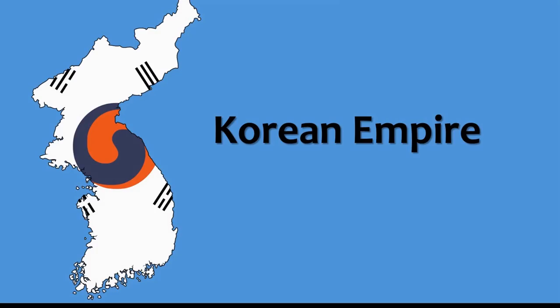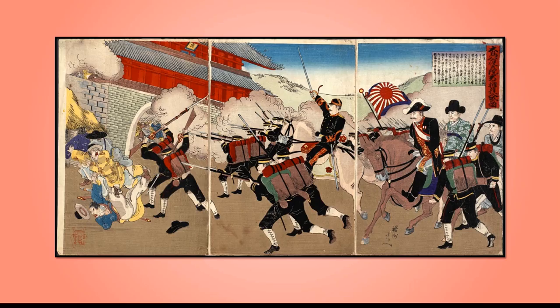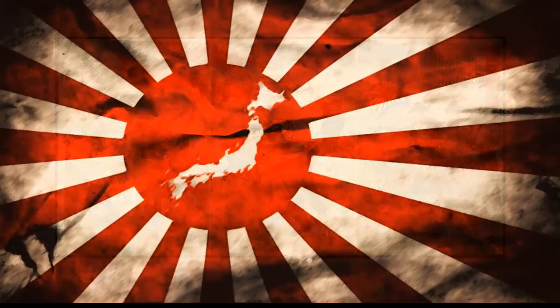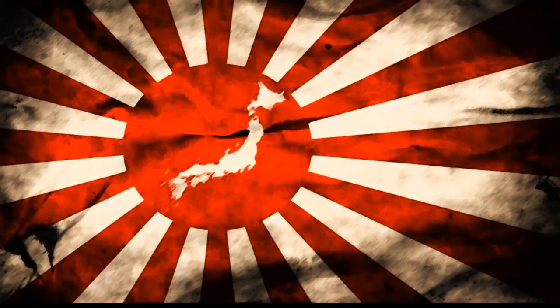Korea was a united country for much of its history, with a Korean empire being established in the early 20th century. However, this was to be very short-lived, as in 1910 the Japanese annexed Korea, becoming part of a rapidly expanding Japanese empire that would bring them into the Second World War after their bombing of the Americans at Pearl Harbor.